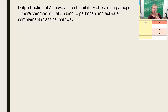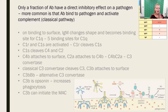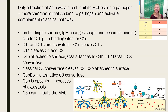Only a fraction of antibodies have a direct inhibitory effect on a pathogen. More commonly, antibody is going to fight a bacterial infection by activating complement through the classical pathway of complement activation. Instead of having C-reactive protein or mannose-binding lectin being the activator, it's IgM being the activator. It's called the classical pathway because it is the adaptive immune system — with antibody — activating it.